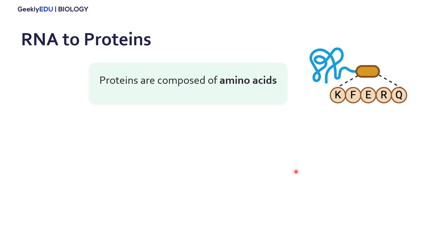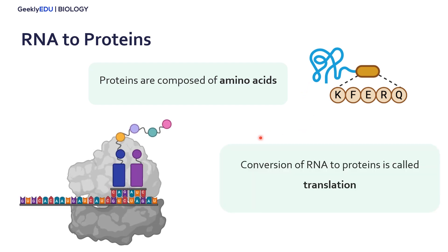The second part of the central dogma is RNA to proteins. Proteins are composed of not nucleic acids, but rather amino acids. These amino acids are strung together into a polypeptide chain, which creates a protein. The conversion of RNA to proteins is called translation. Here we can see the RNA being read by our ribosome, which is the dark gray protein in the back, and the RNA is then being translated into amino acids. Each circle here is an amino acid, which is being strung together into a protein.